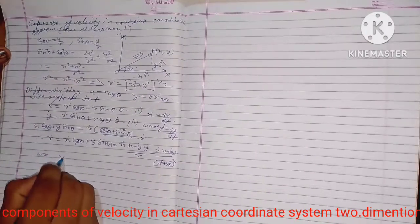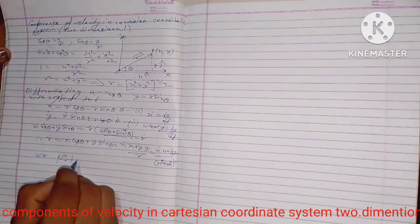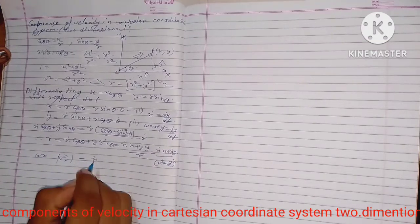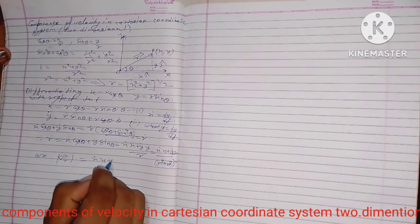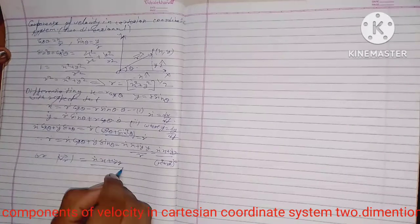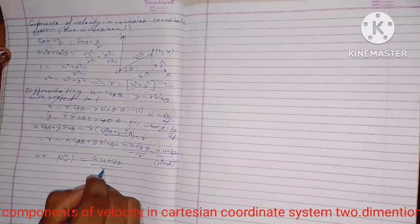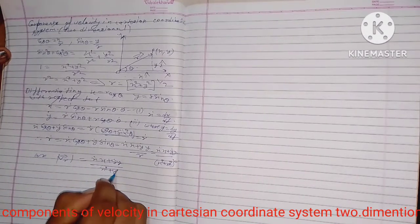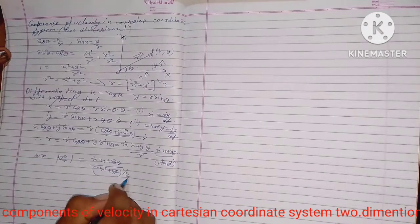So the radial velocity component: |v_r| = dR/dt = (dX/dt·X + dY/dt·Y) / (X² + Y²)^(1/2).